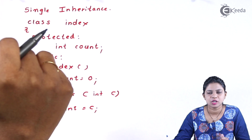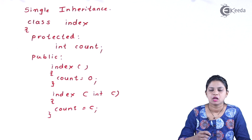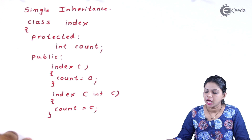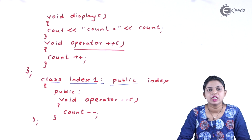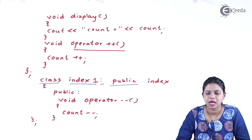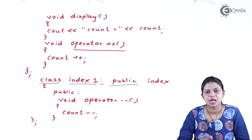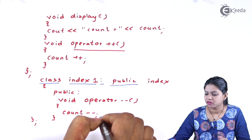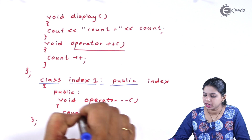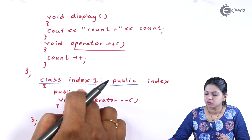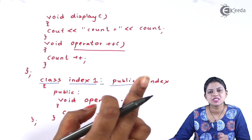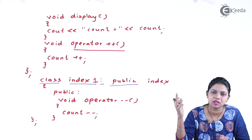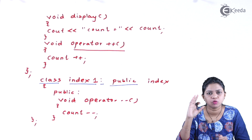In the public section, as discussed, I created two constructors: zero-argument and one-argument. Then I created a derived class named Index1, which is a child of class Index. Point to be noted: I haven't declared the count variable again in the derived class. The variable was already declared inside the base class, so the derived class can directly access it. That is the use of inheritance — it allows the derived class to access all the members and features of the base class.